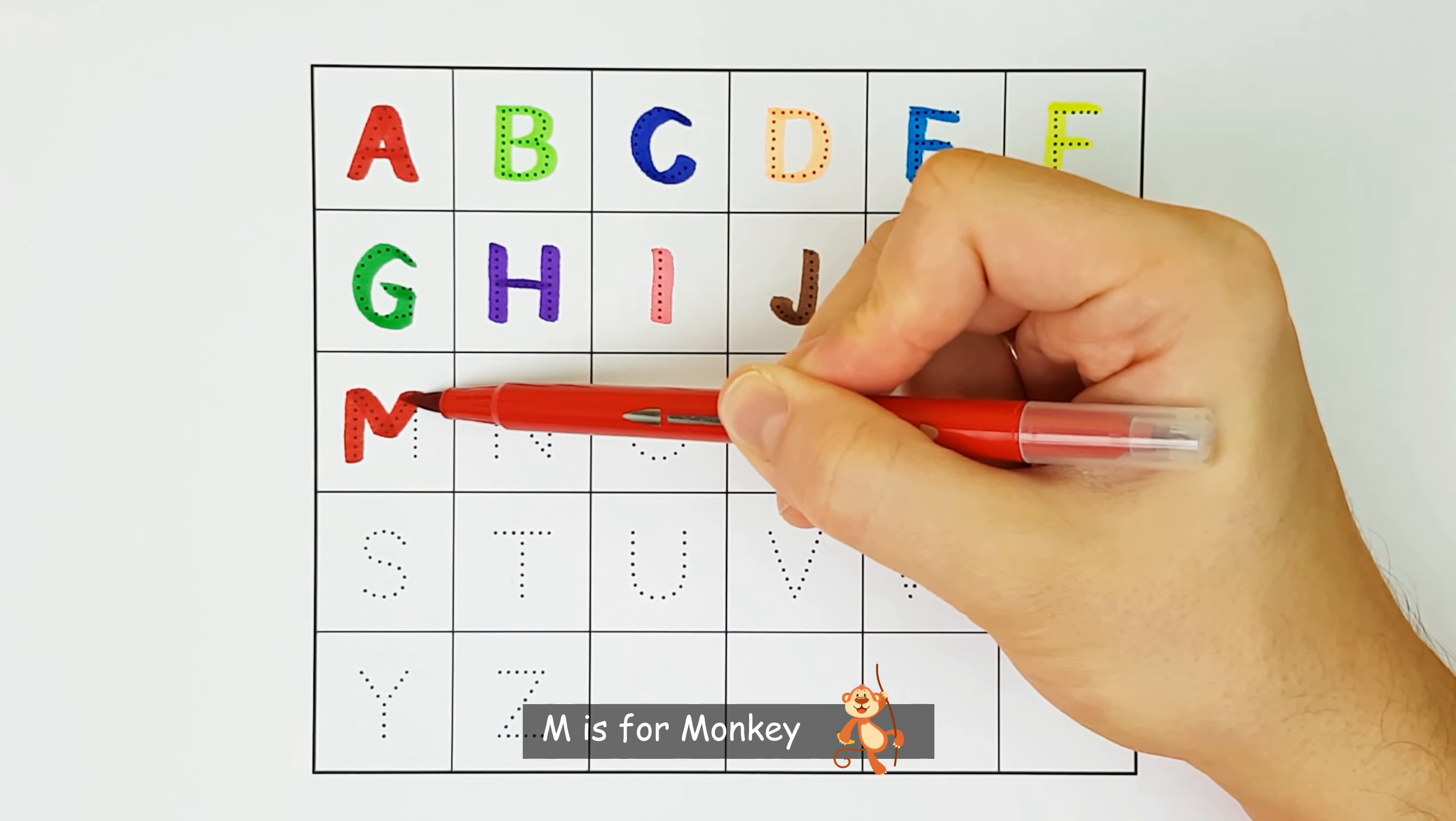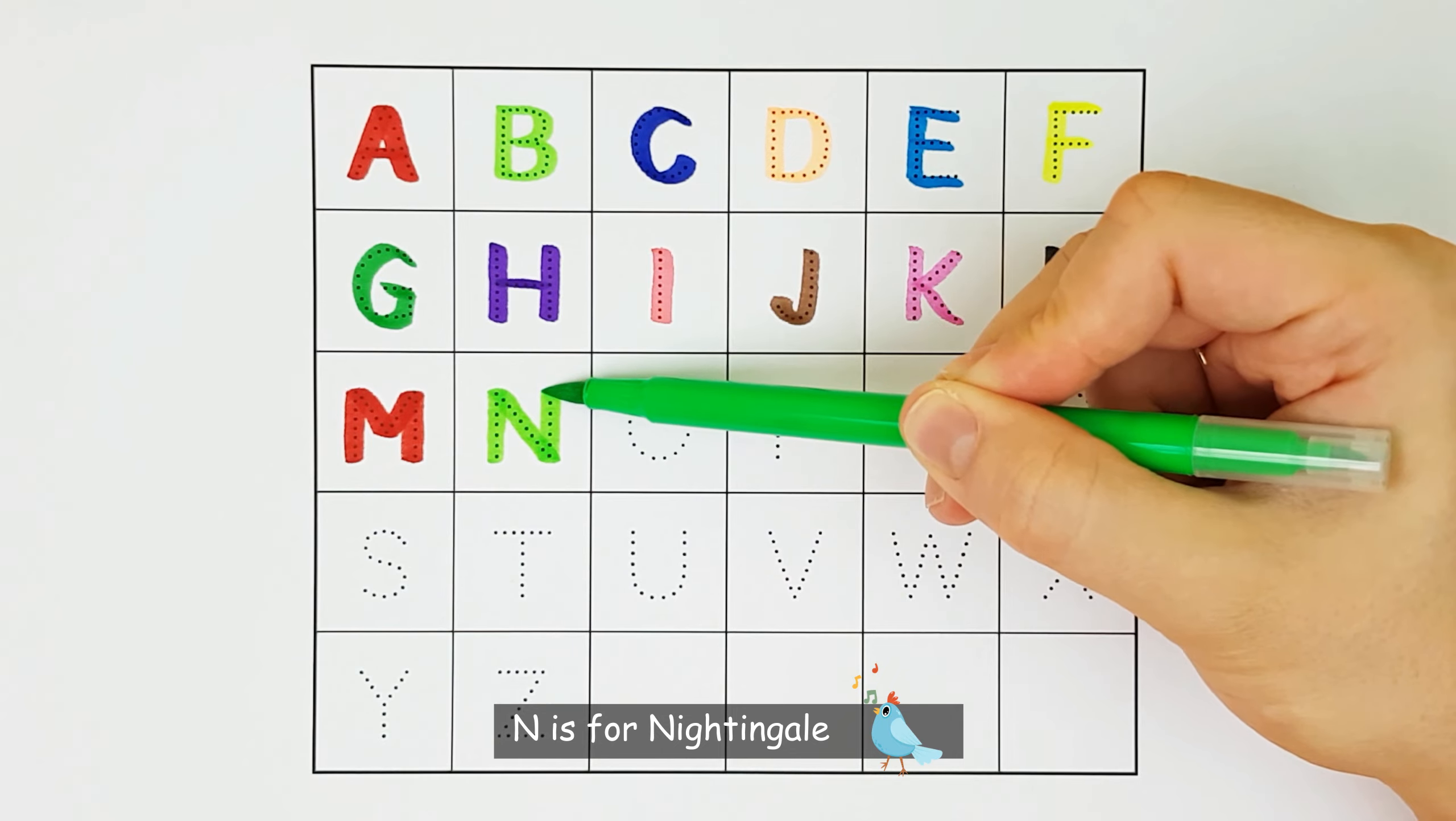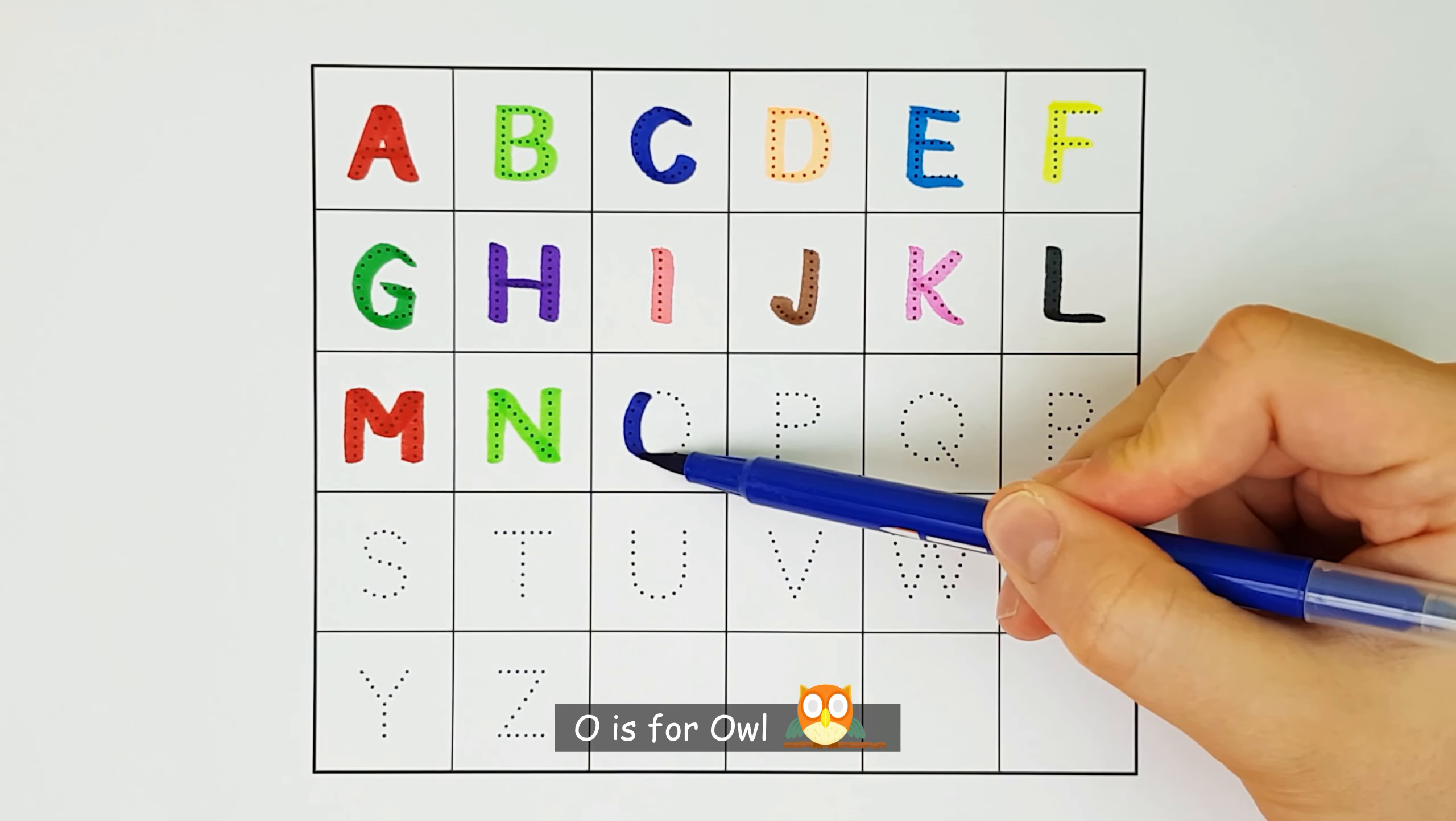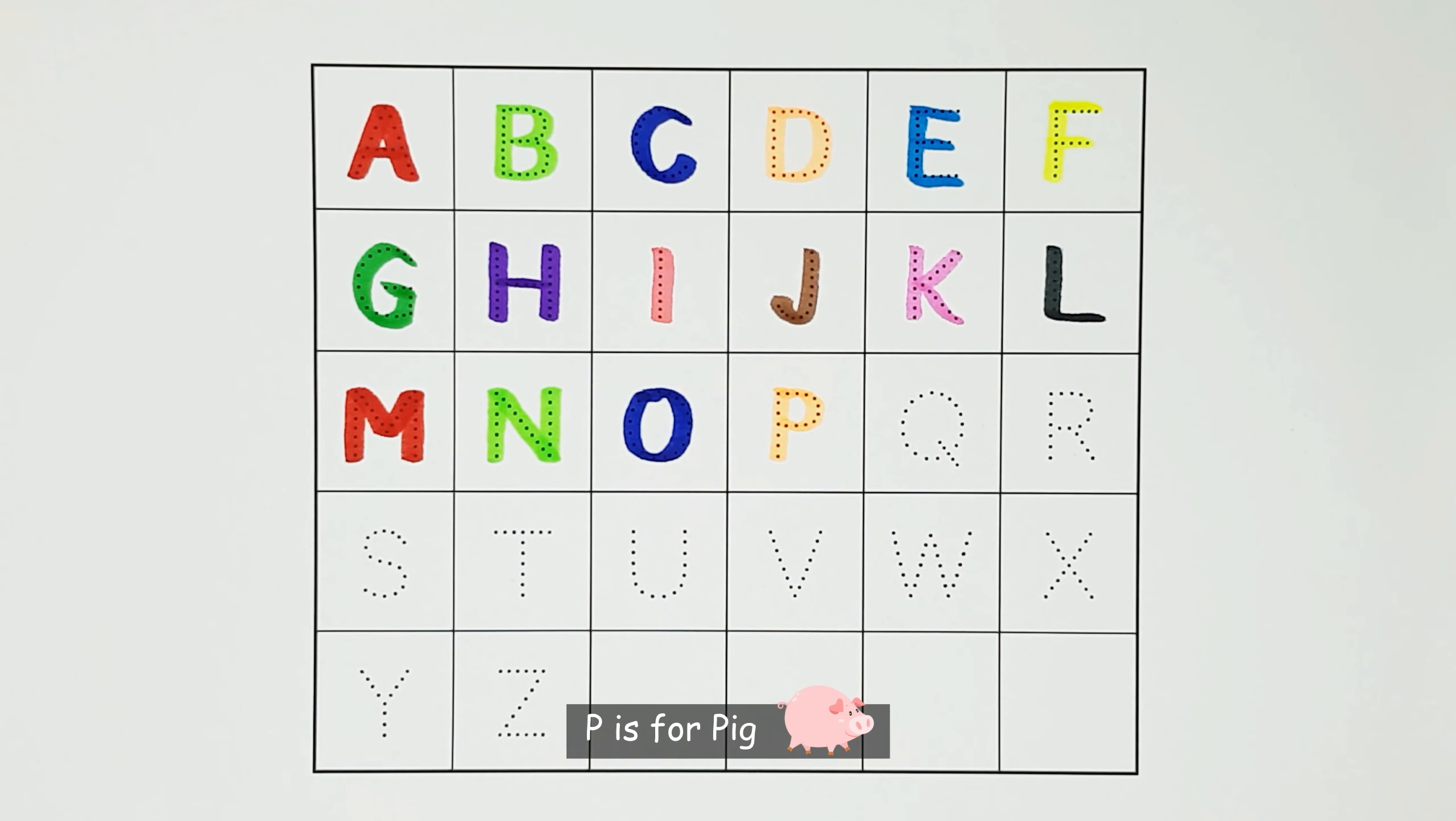M. M is for Monkey. M. N. N. N is for Nightingale. N. O. O is for Owl. O. P. P. P is for Pig. P.